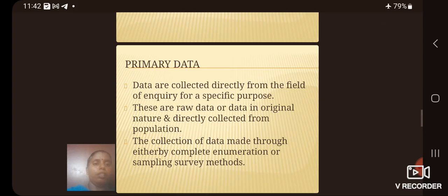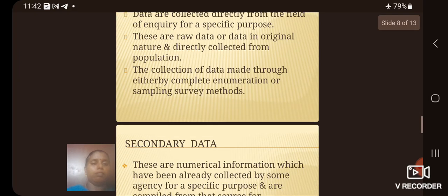Primary data. Primary data or data collected directly from the field of enquiry for a specific purpose. These are raw data or data in original nature and directly collected from population. The collection of data made through either complete enumeration or sampling survey method.